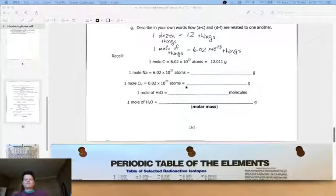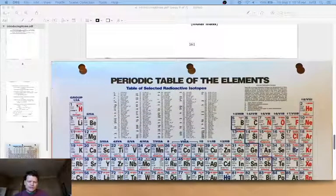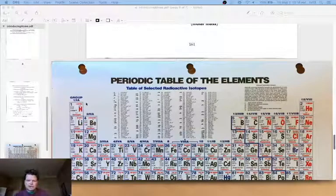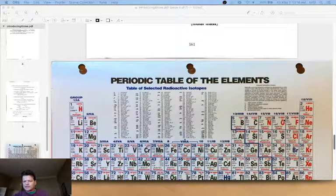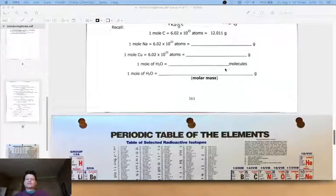A mole of water would still be Avogadro's number of molecules now. We're not talking about atoms anymore, we're talking about molecules. But as far as mass goes now it's H2O, so we'd have to add up 2 times the hydrogen, so 2 times 1.008, and 1 times oxygen. Oxygen is 16.00. So that ends up being 18.016 grams per mole.